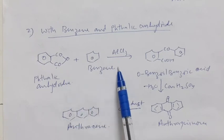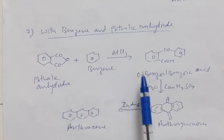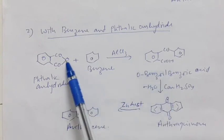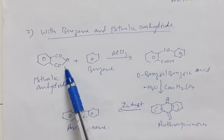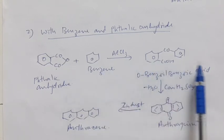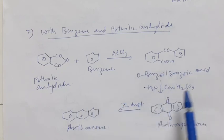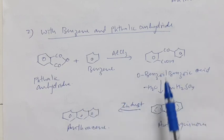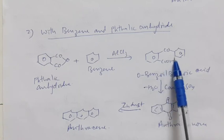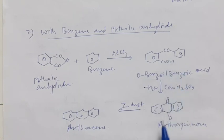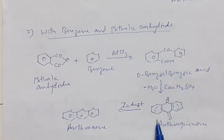The next reaction uses benzene and phthalic anhydride. Phthalic anhydride reacts with benzene in the presence of aluminum chloride to give benzoyl benzoic acid, and then anthracene is formed from the benzoyl benzoic acid.